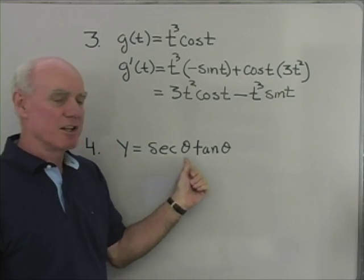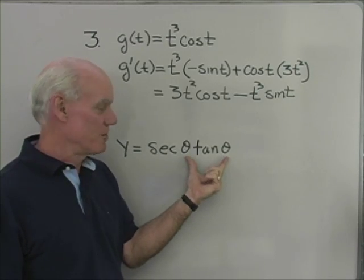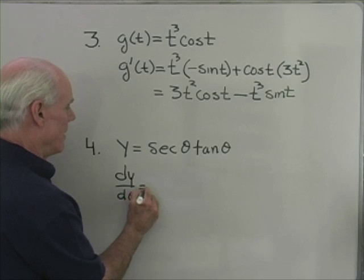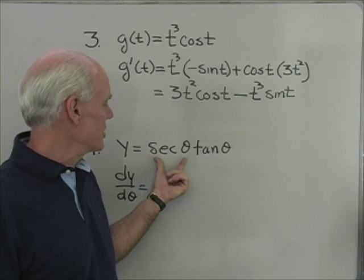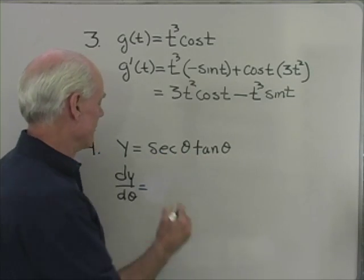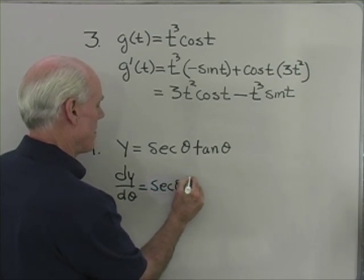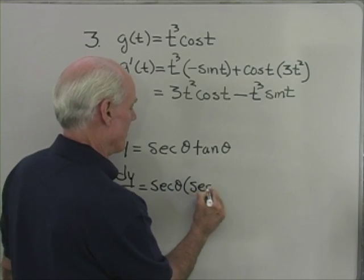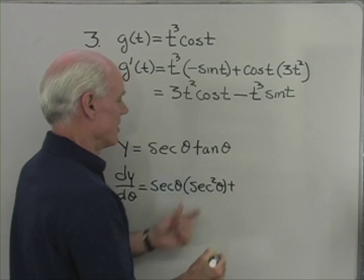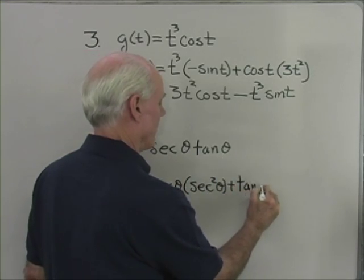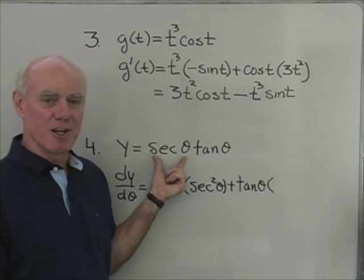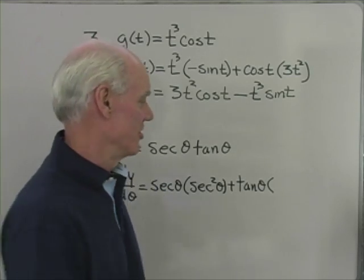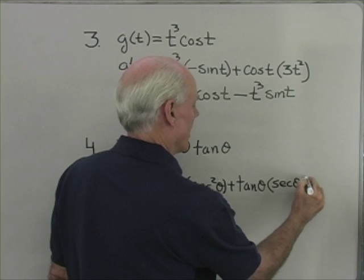Problem 4: y equals secant theta times tangent theta. Let's differentiate with respect to theta. dy/dθ — again, I have a product rule to use. I'll take the first, secant theta, times the derivative of the second. The derivative of tangent — we just did that — is secant squared. Plus the second, tangent theta, times the derivative of the first. The derivative of secant, if you have it memorized, is secant tangent, so that gives secant theta times tangent theta.